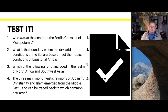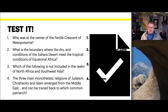Let's look at some test questions. Who was at the center of the Fertile Crescent of Mesopotamia? What is the boundary where the dry, arid conditions of the Sahara Desert meet the tropical conditions of equatorial Africa? Which of the following is not included in the realm of North Africa and Southwest Asia? And finally: Judaism, Christianity, and Islam are three main monotheistic religions that emerged from the Middle East — they can all be traced back to which common patriarch?